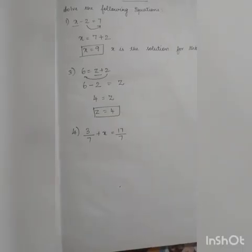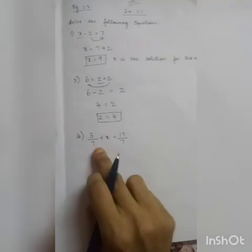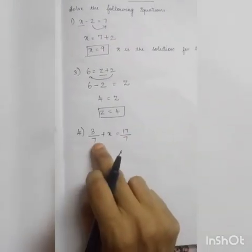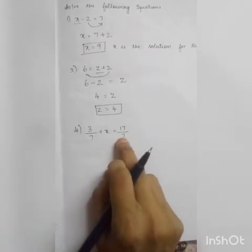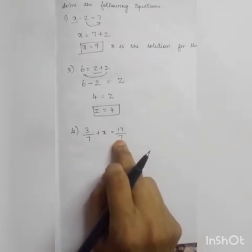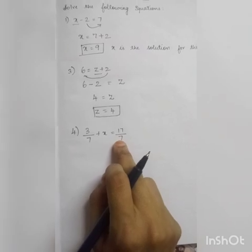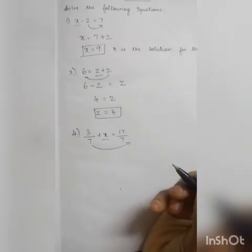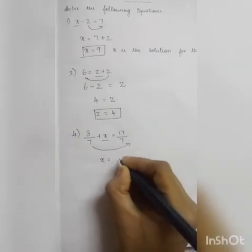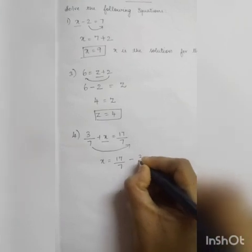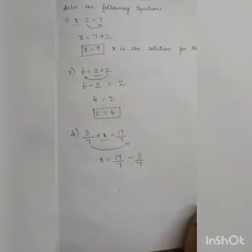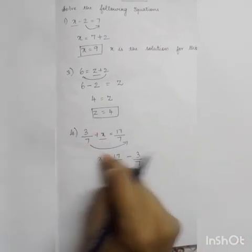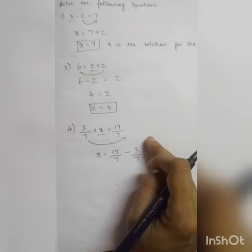Next is your 4th question: 3/7 plus x equals 17/7. Here we want to find the value of x. I am bringing 3/7 to that side, so x is equal to 17/7 minus 3/7. Because plus 3/7 goes to that side, it becomes minus 3/7.